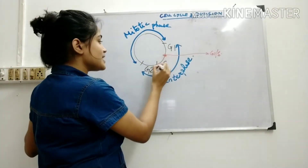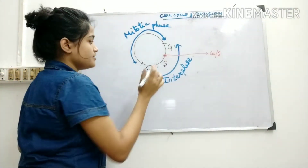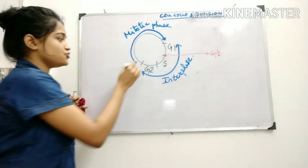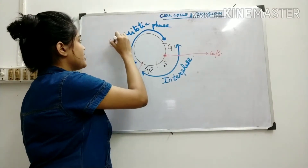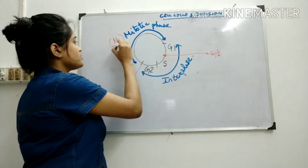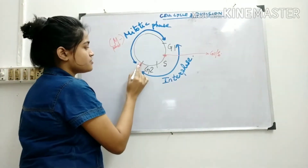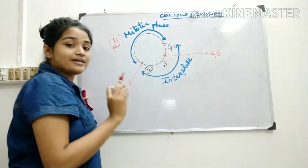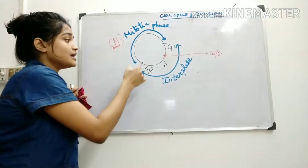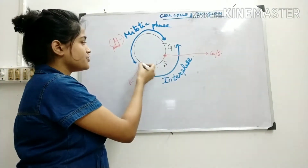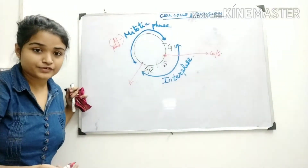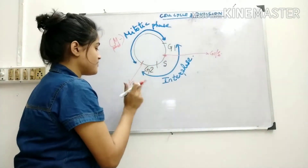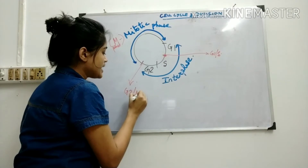There is also an intra-S checkpoint inside the S phase. Another checkpoint is at the G2/M boundary — the G2/M checkpoint — which checks whether DNA is damaged, whether the correct chromosome number is present, and whether the enzymes, proteins, and RNA required for the mitotic phase, including spindle fibers, are formed. These checkpoints are regulated by certain protein complexes.